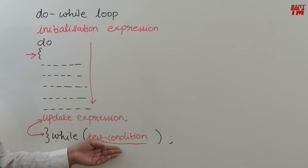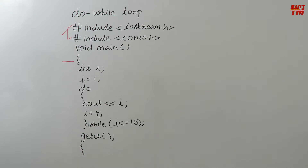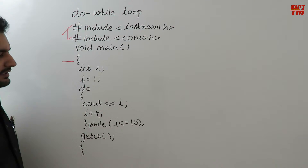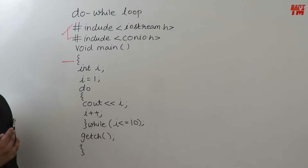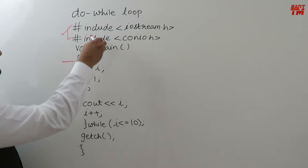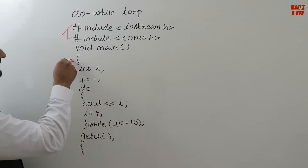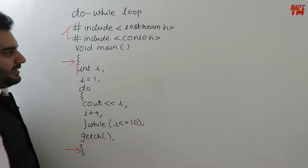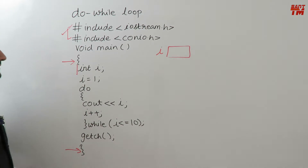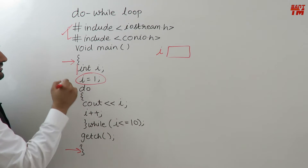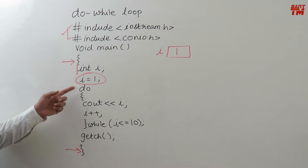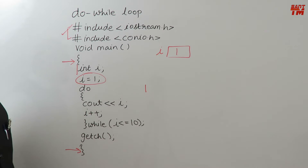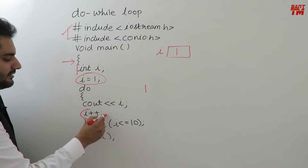Now let's take a program example of the do-while loop — the same program to print the first ten natural numbers that we studied for the for loop and the while loop, so as to get the difference clear. In void main, I have declared an integer variable i, initialized with 1. Then the 'do' keyword — without checking any condition we print the value of i, so the loop body executes without checking any condition. Then the update expression i++ executes, making i equal to 2.